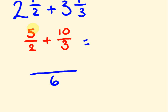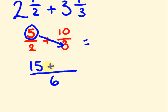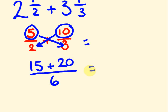Then what we do is start on the top left and multiply it by its diagonal pair on the bottom. So five times three is fifteen. It's pretty important you start on the top left, especially later on when we get into subtraction. So that was fifteen. We add these together, then go over to the right and multiply by the diagonal over there. So ten times two is twenty. So we have fifteen plus twenty over six, which is thirty-five.